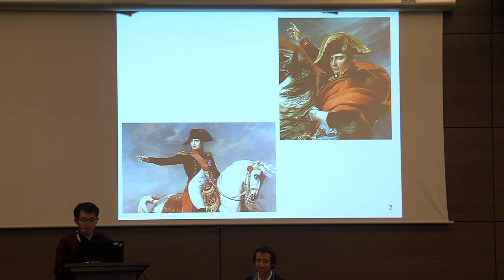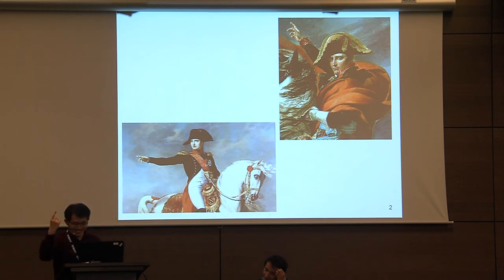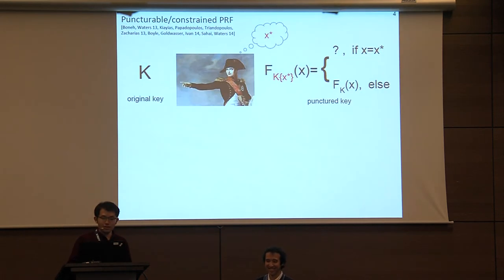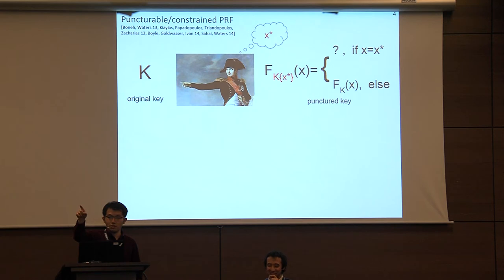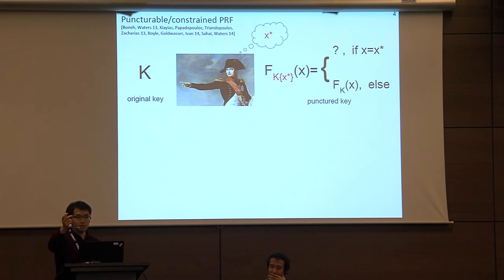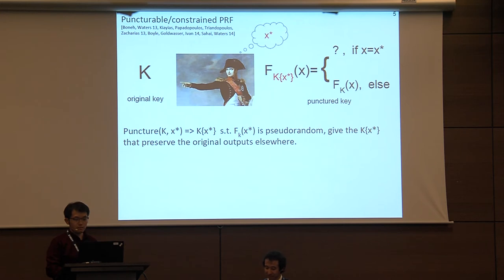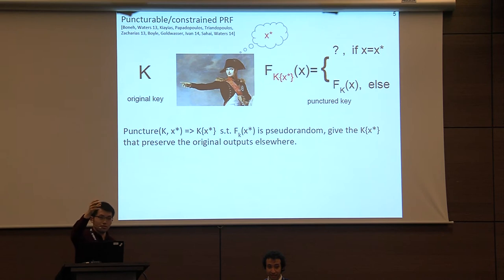Let me start with history. The textbook puncturable PRF — the GGM tree-based PRF — defines each point by a path of PRG evaluations. To puncture it, you output values along the siblings of the punctured point, so the value at the punctured input X* is wiped out but everything else can still be evaluated and is preserved.